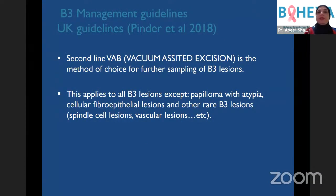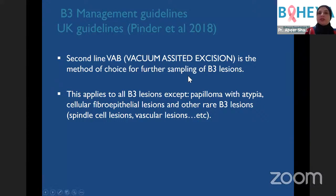The management of B3 has many current guidelines. The UK published detailed guidelines in 2018, very similar to American and European guidelines. The gold standard now is further sampling by vacuum-assisted biopsy (VAB) or vacuum-assisted excision (VAE) — not by surgery, but done by radiologists using suction to take out a large amount of tissue. The idea is not to completely remove the lesion, but to sample it adequately to ensure there is no coexisting in-situ or invasive carcinoma. This pathway applies to all B3 lesions, with a few exceptions.